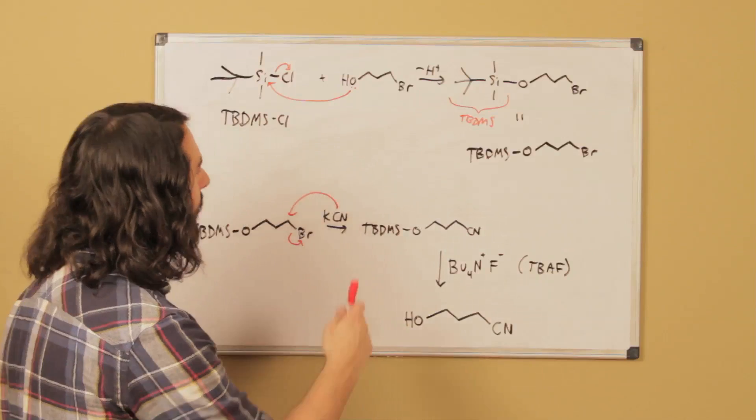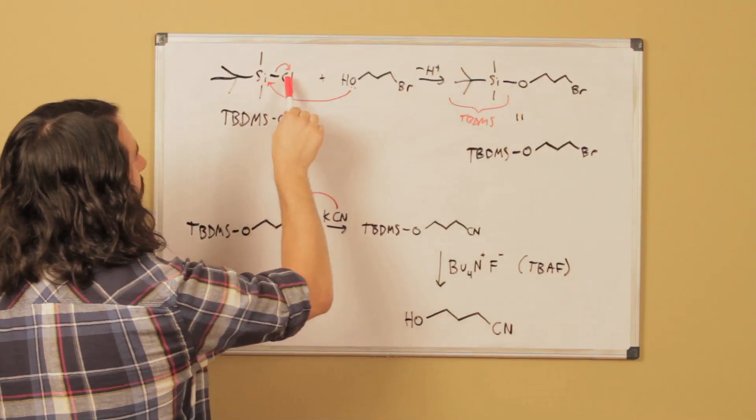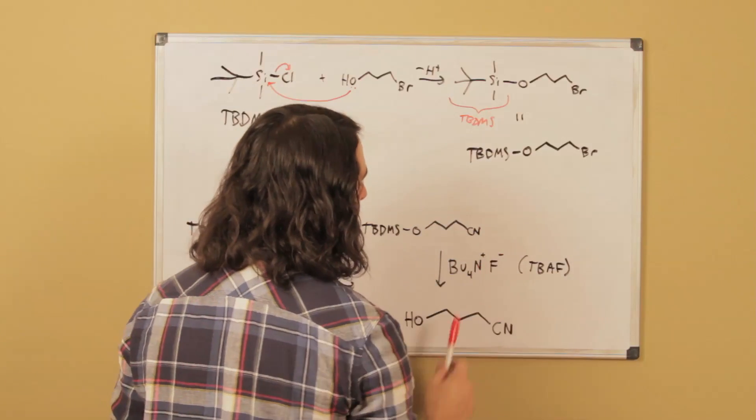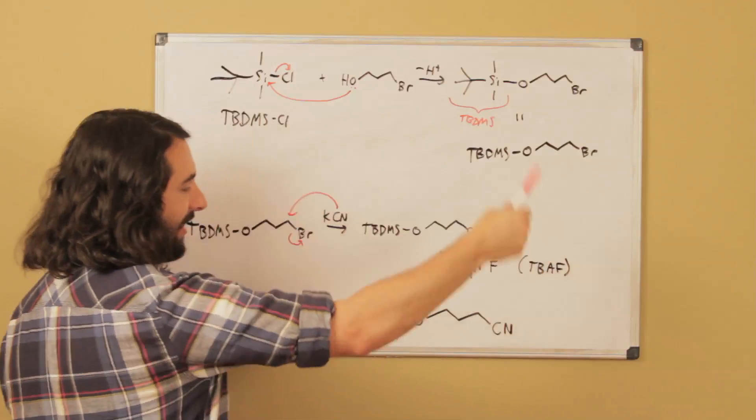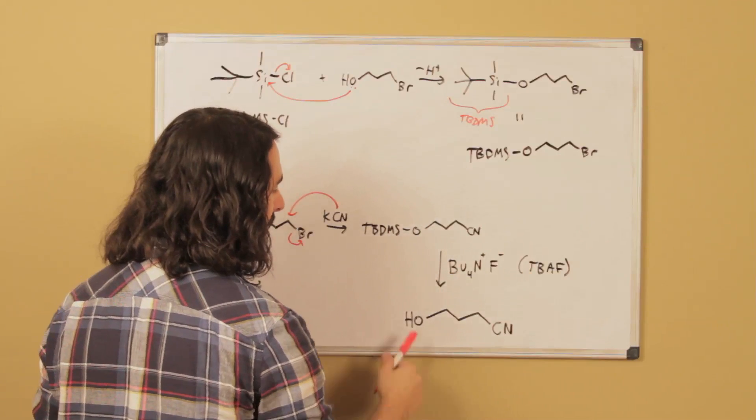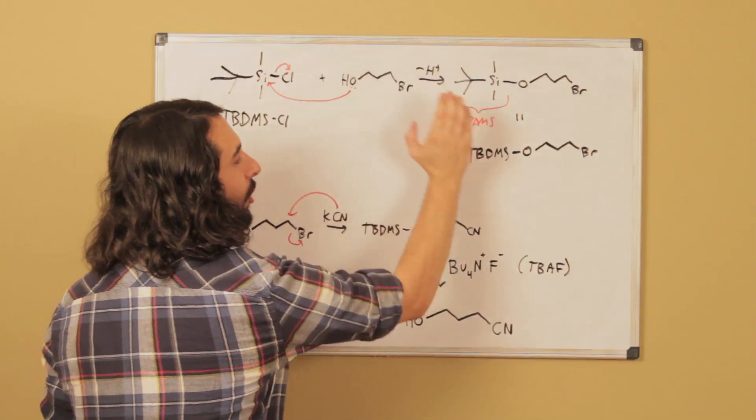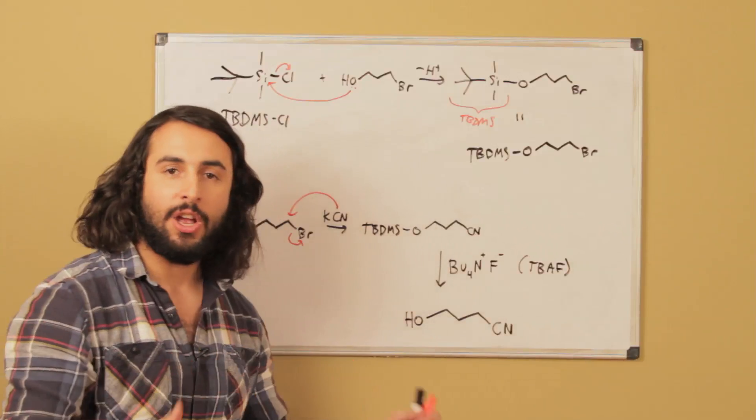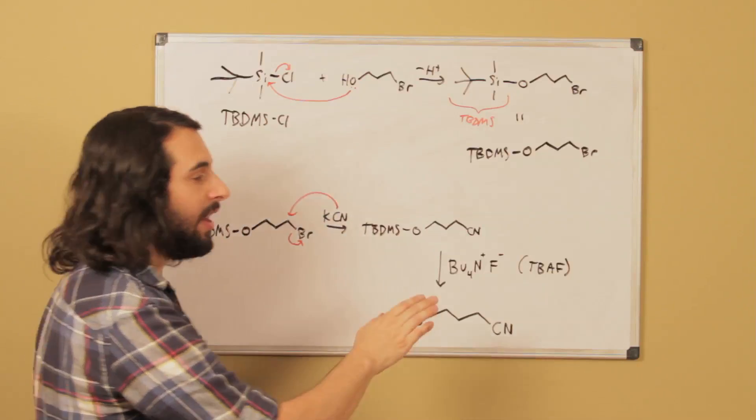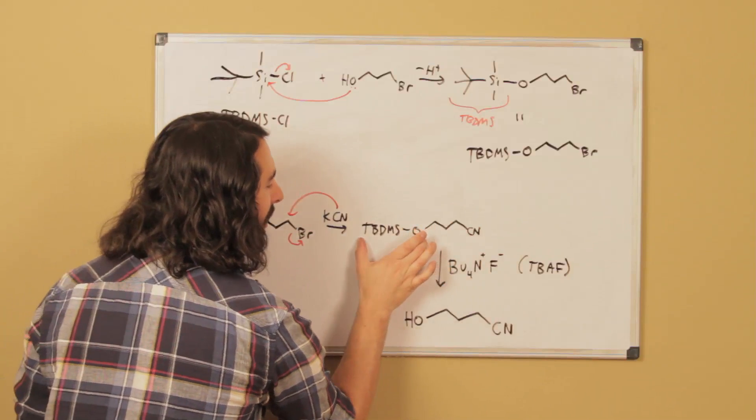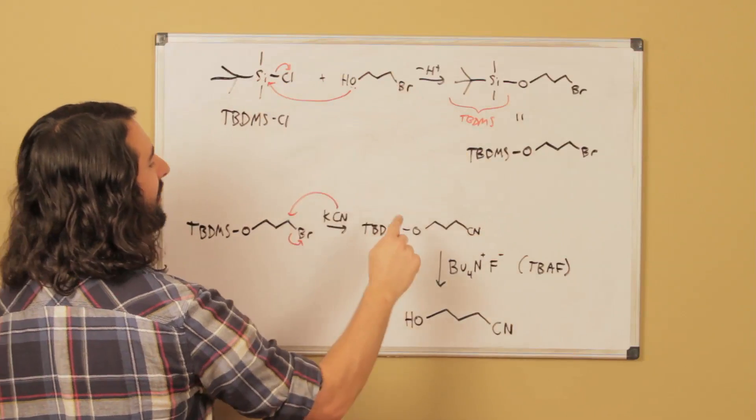Now we want to get our hydroxyl group back. The oxygen gave the oxygen-silicon bond to replace the silicon-chlorine bond. Now fluoride is more labile than even oxygen, so fluoride can come in, attack the silicon, and kick that off. That's going to protonate from solvent and we'll get our hydroxyl back. We used TBDMSCl to protect the hydroxyl group, there was no hydroxyl proton to participate in acid-base reactions, we achieved the SN2 we wanted, then we deprotect with TBAF - tetra butyl ammonium fluoride.